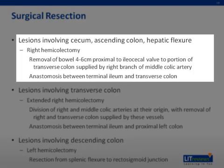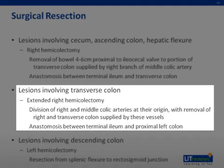For lesions involving the cecum, ascending colon, and hepatic flexure, a right hemicolectomy is the procedure of choice. This involves removal of the bowel from 4 to 6 centimeters proximal to the ileocecal valve to the portion of the transverse colon supplied by the right branch of the middle colic artery. An anastomosis is fashioned between the terminal ileum and the transverse colon. An extended right hemicolectomy is the procedure of choice for most transverse colon lesions and involves division of the right and middle colic arteries at their origin with removal of the right and transverse colon supplied by these vessels. The anastomosis is fashioned between the terminal ileum and the proximal left colon.